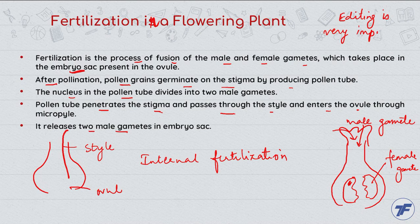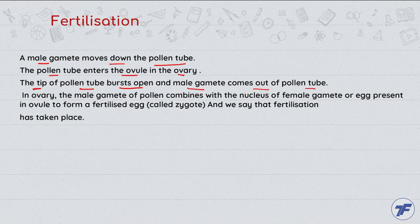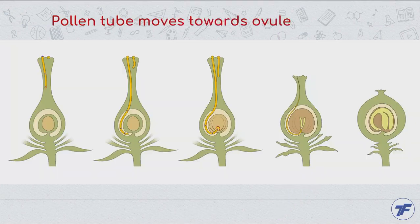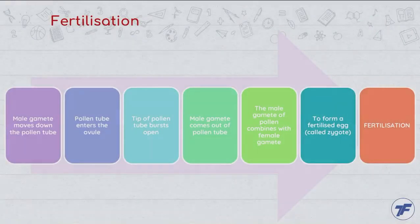It releases 2 male gametes in the embryo sac — the pollen grain gives its 2 male gametes into the embryo sac. The male gamete moves down the pollen tube, pollen tube enters the ovule, the tip of the pollen tube bursts open and the male gamete comes out of the pollen tube. This is coming inside and this hole where it enters is called the micropyle. It gives 2 male gametes here and fertilization takes place.